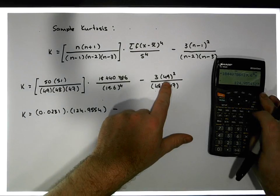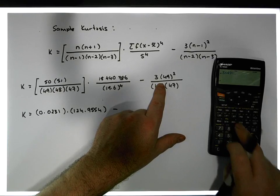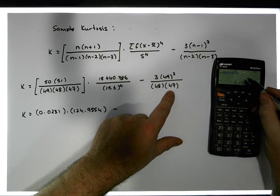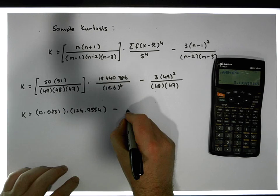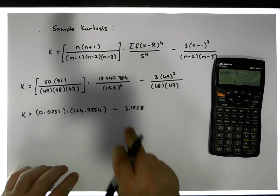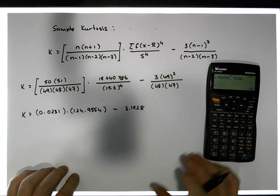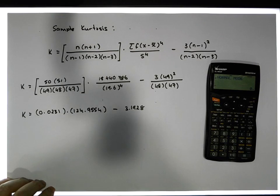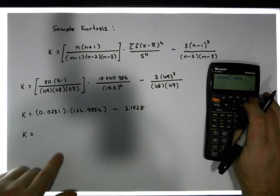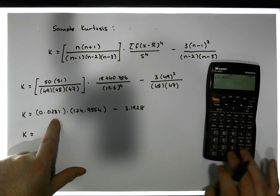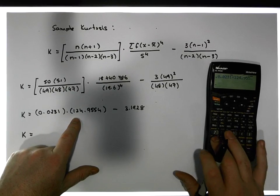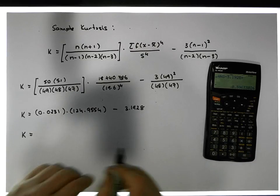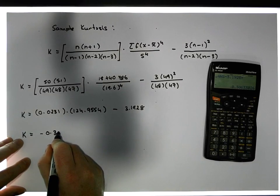We then subtract the normalization factor, which is three times 49 squared, divided by 48, divided by 47. That gives 3.1928. So the final result is k equals 0.0231 times 124.9554, minus 3.1928, which gives us a kurtosis of minus 0.3063 to four decimal places.